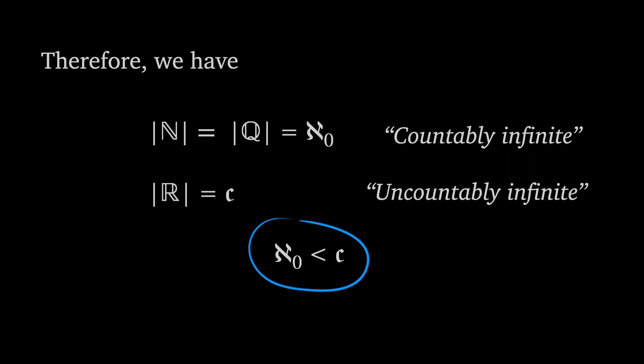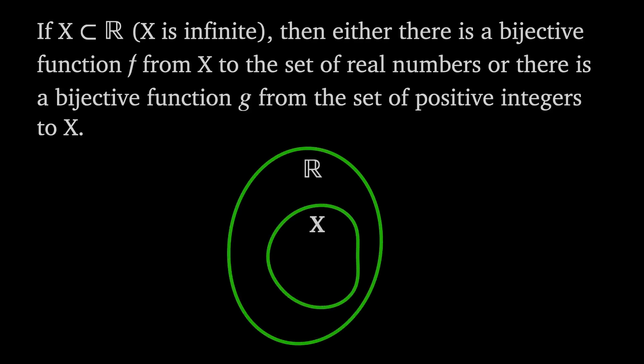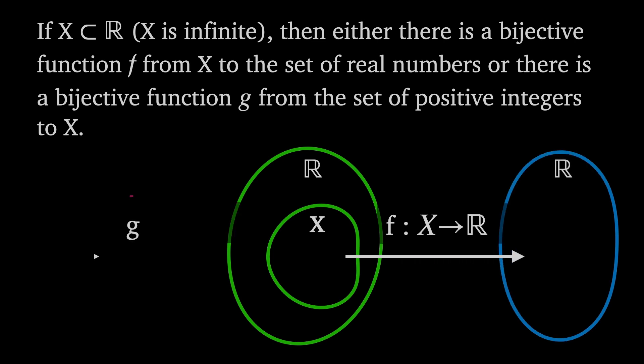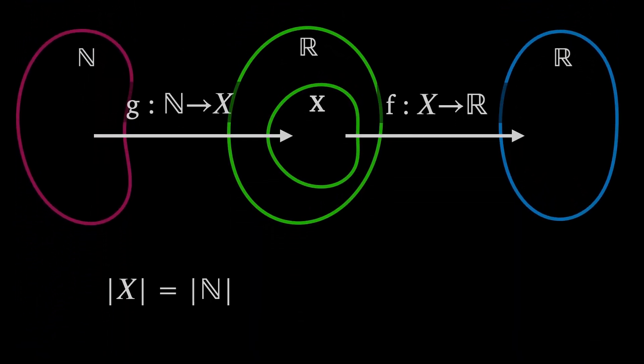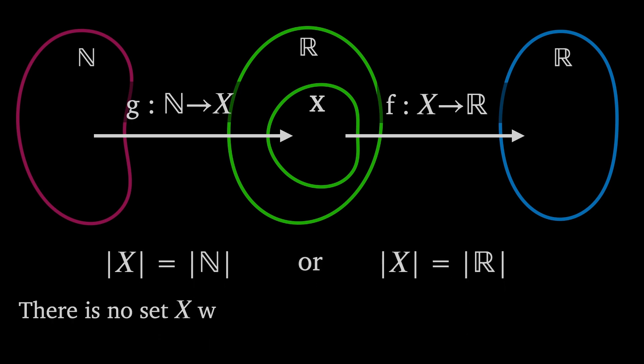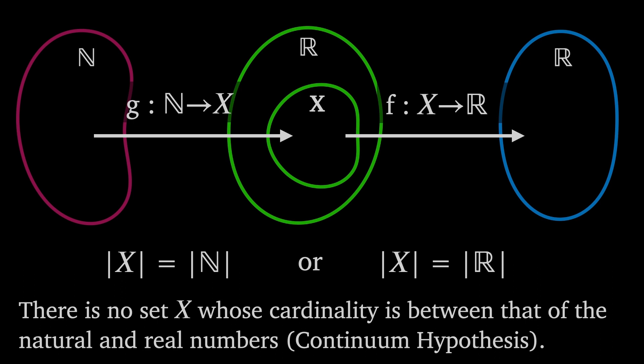We can now come back to our original problem. Let X be an infinitely large subset of the real numbers. Then there's either a bijective function f from X to the set of real numbers or there is a bijective function g from the set of positive integers to X. Using what we now know about bijections, we can see this implies that the cardinality of X is either equal to aleph-null or c. Notice that there are only two choices here and nothing in between.